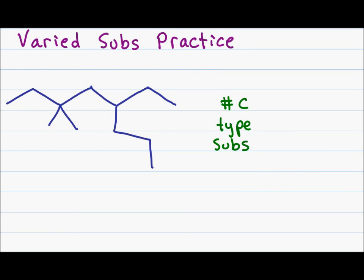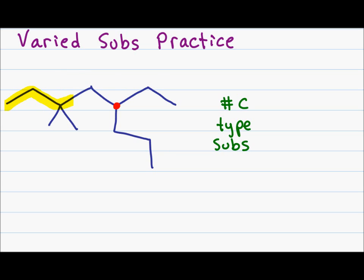Let's try another example. At first glance it appears I only have seven carbons in my parent chain, but I have to use the junction rule to verify. The biggest junction has three groups coming out of it: the top right has two carbons, the bottom right has three, and towards the left there are four carbons with a substituent. This shows my original guess was wrong — my parent chain actually slopes downward. Numbering from the left gives the first substituent at carbon three, versus four from the right, so I number from the left.